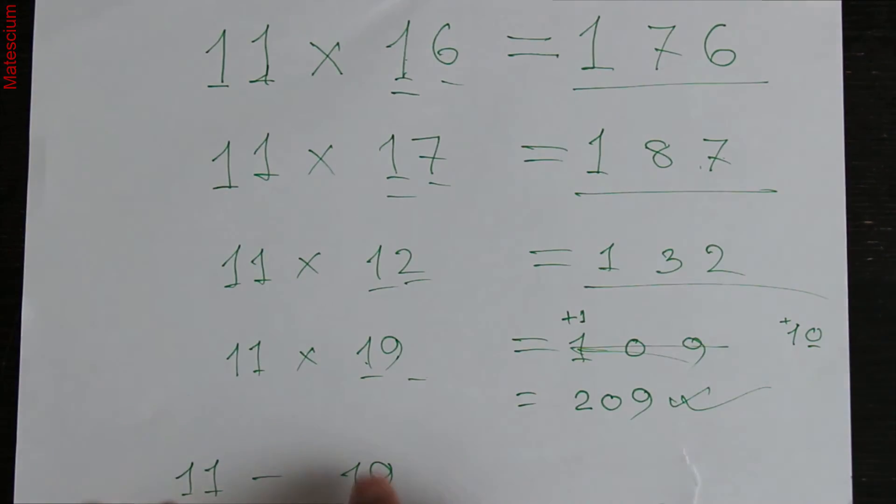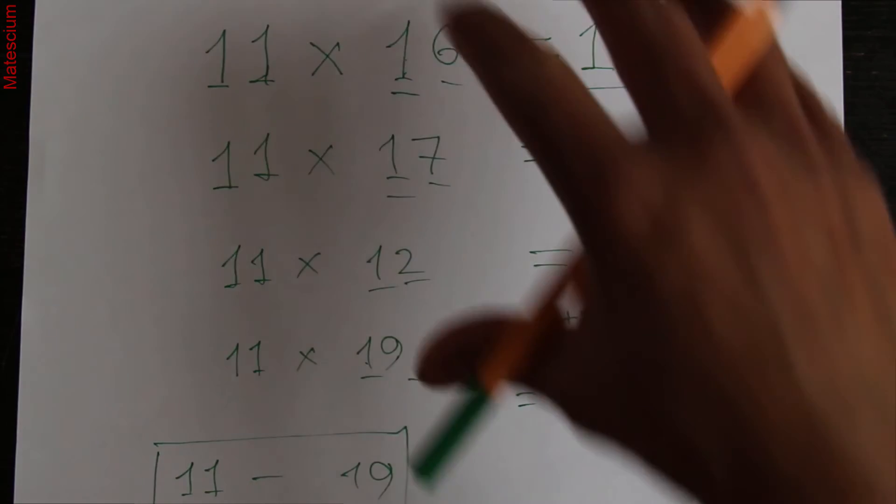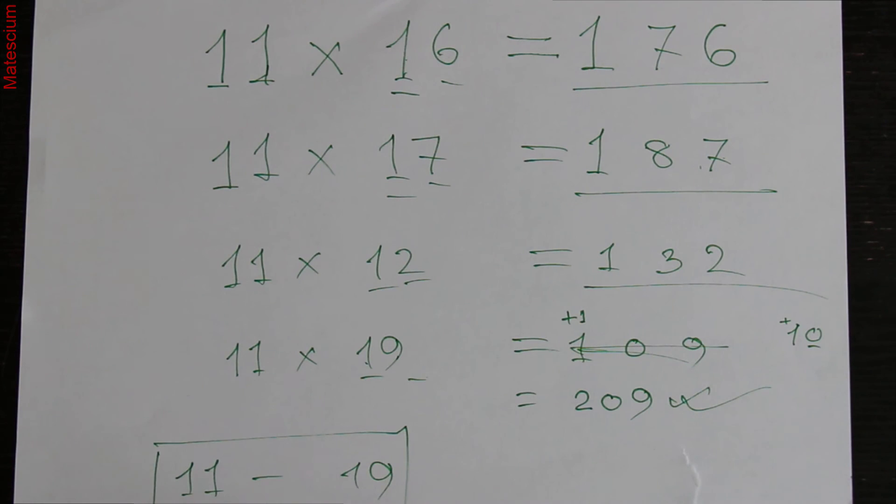The numbers above 19 and below 11 don't work according to this formula. That means you can multiply any number between 11 to 19 by this formula. Thank you so much for watching this video.